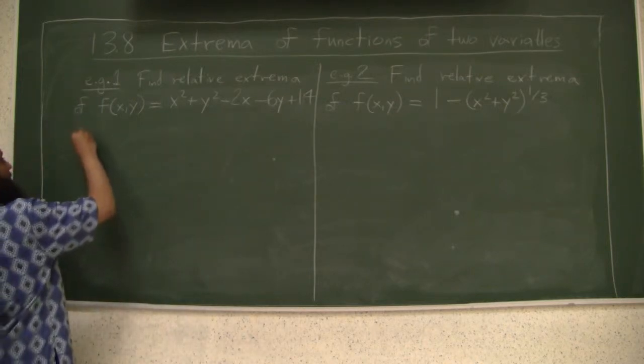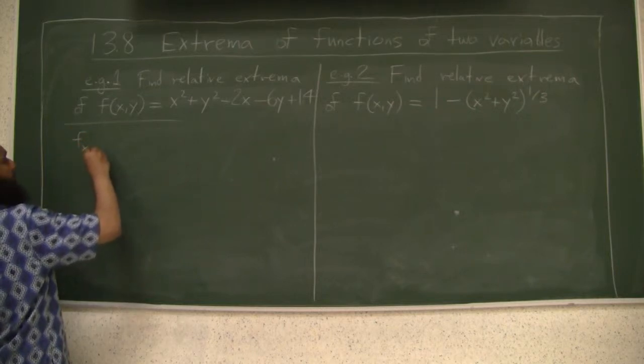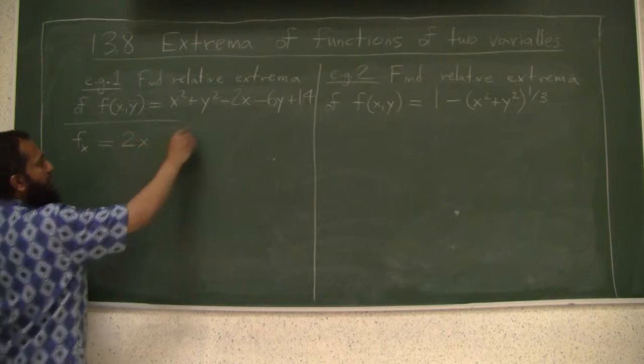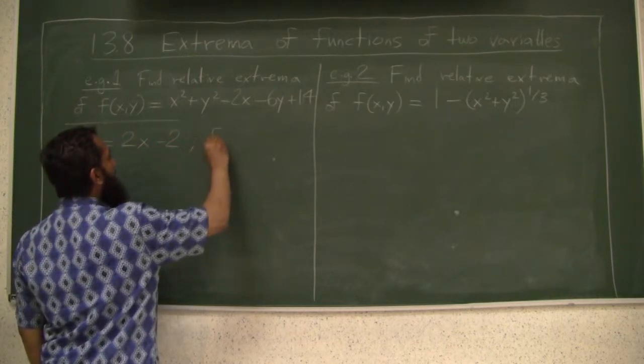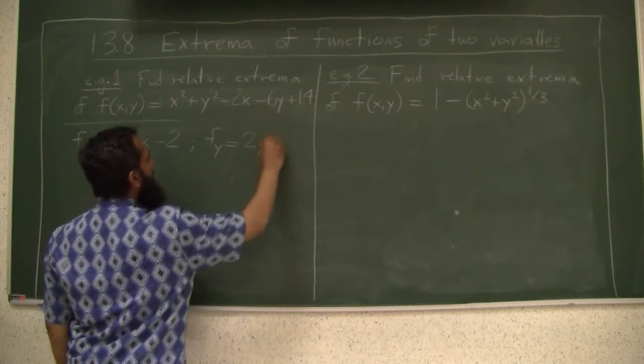So the first thing we do is we will find the partial derivatives. What is f sub x? f sub x of this function is 2x minus 2, and f sub y is 2y minus 6.